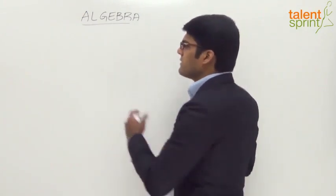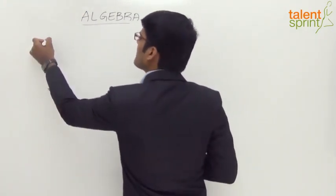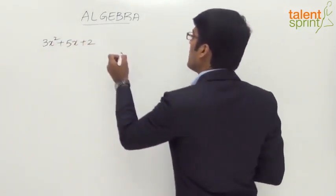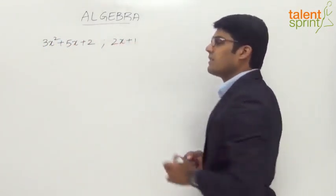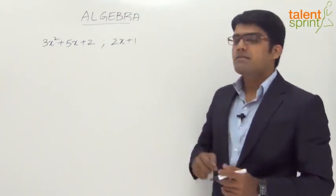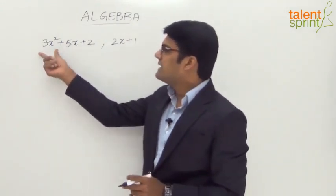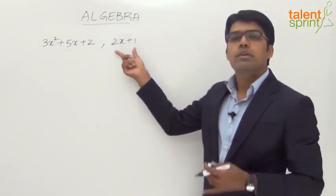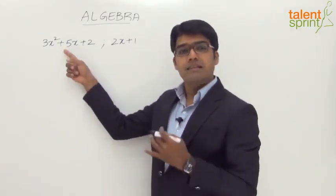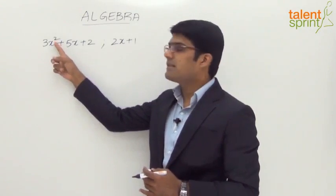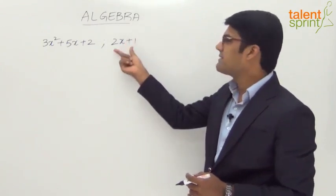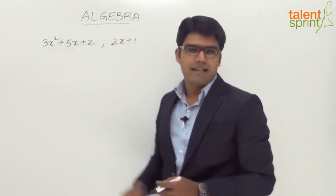Let us say we have got two polynomials. The first one is 3x squared plus 5x plus 2, and the second polynomial is 2x plus 1. We have got three terms in the first polynomial and the second one has got only two terms — so basically this is a binomial. The degree of the first polynomial is 2, since the highest power is 2. The highest power in the second is 1, since x is x to the power 1. So we can say this is a first degree polynomial and this is a second degree polynomial.